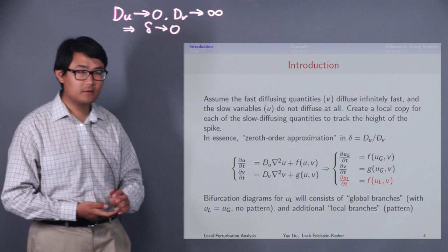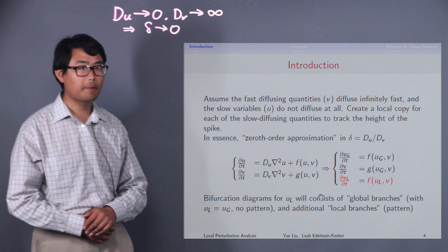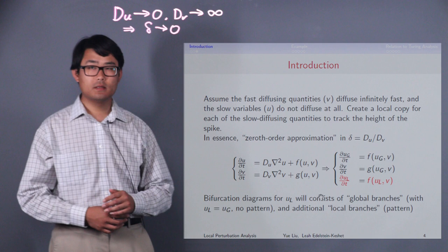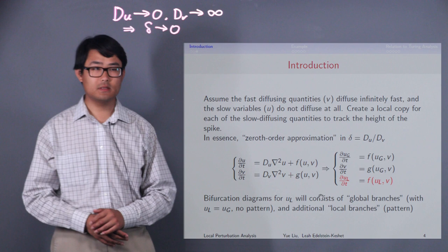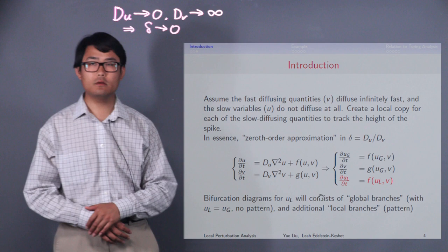Finally, we use another variable, ul, that tracks the height of the spike. Since we assume that the spike is infinitely thin, the ul, the spike, does not affect global dynamics, which is why in the top two global equations, ul does not appear.